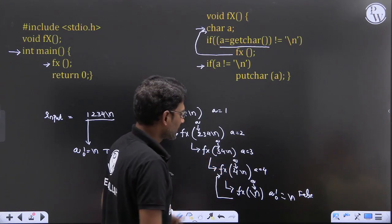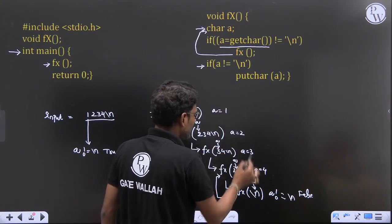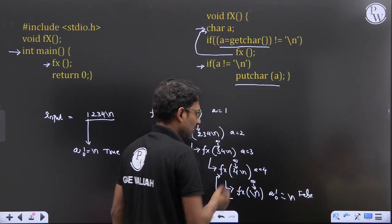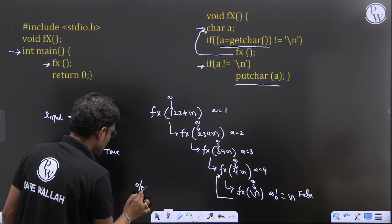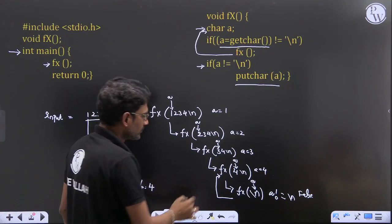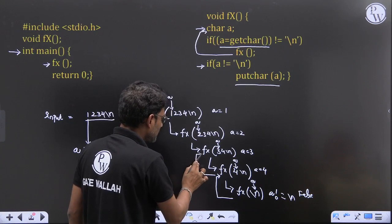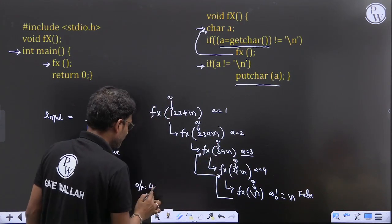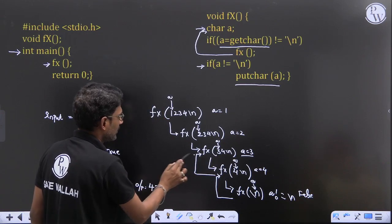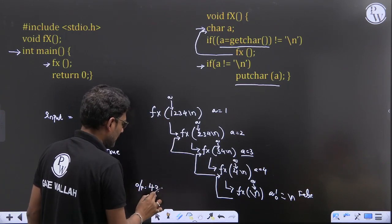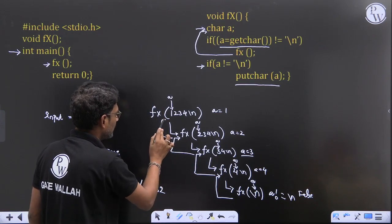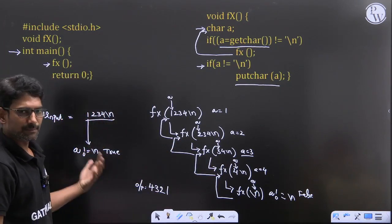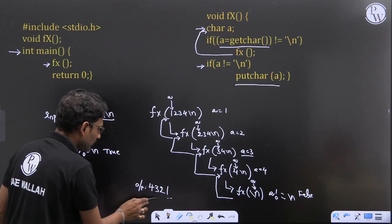Now a not equal to backslash n, so putchar of a. So what would be the output? First we get 4. Now a is not equal to backslash n, yes, so putchar of a: 3, putchar of a: 2, putchar of a: 1.